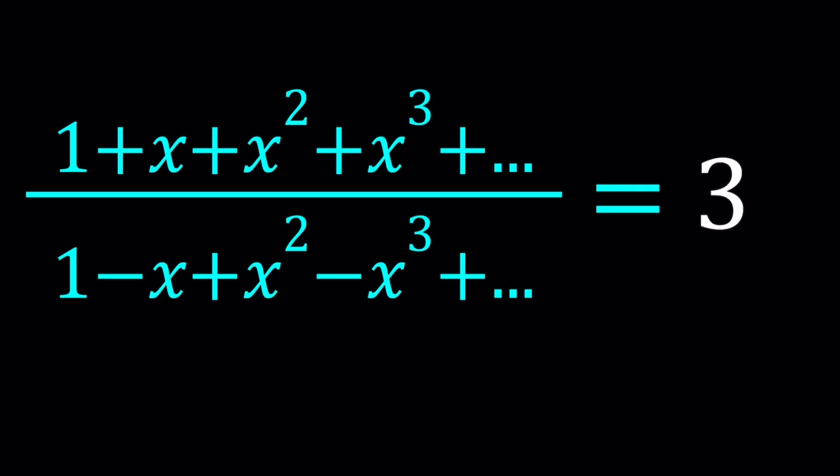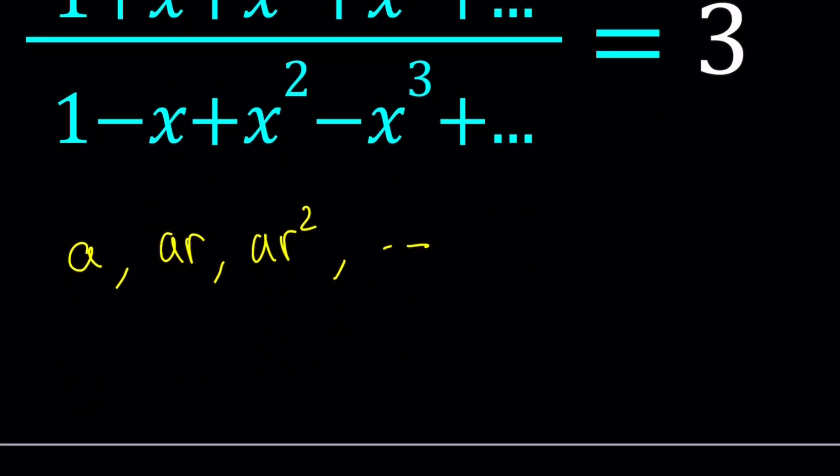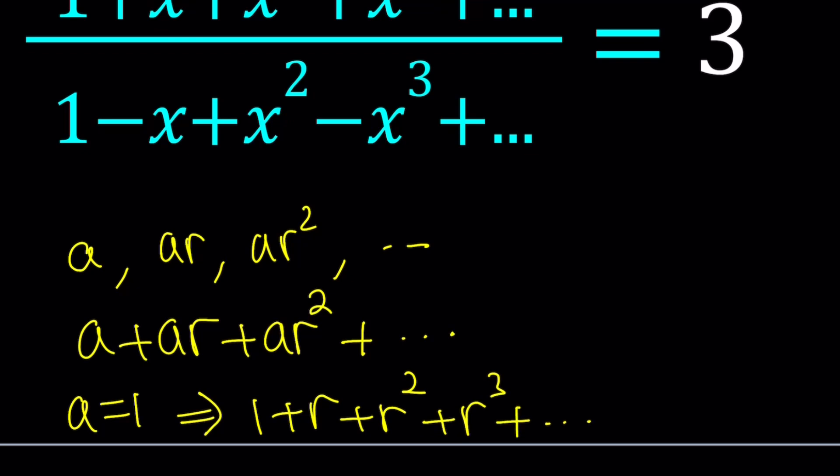What is a geometric sequence, first of all? If you have something like first term A and then multiply by R, multiply by R, and then keep doing this, this is going to be a geometric sequence. If you look at partial sums or just the sum of these terms, this is going to be a geometric series. And if it goes on forever, this is going to be an infinite geometric series. In our case, the first term is 1 in both cases, actually. So A equals 1 gives us a more specific scenario, which is 1 plus R plus R squared plus R cubed plus dot dot dot.